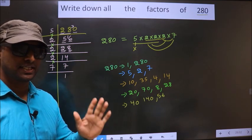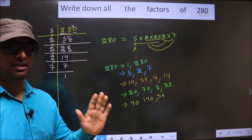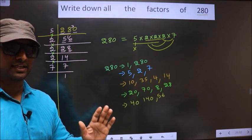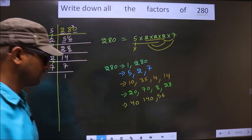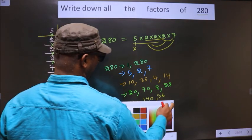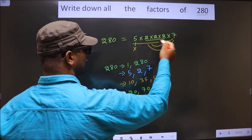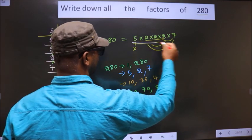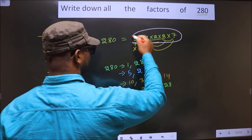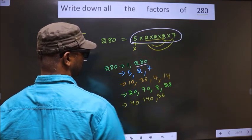Now we take the combination of all 5 numbers. Here we have only 5 numbers, so if we take all 5 we get 280 only.